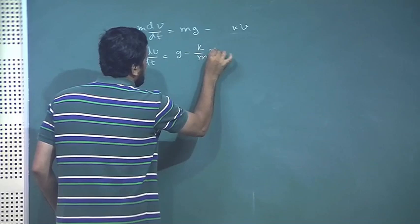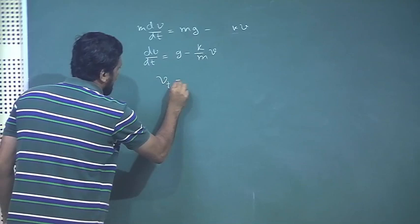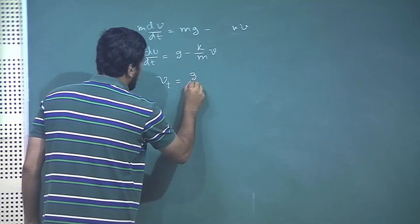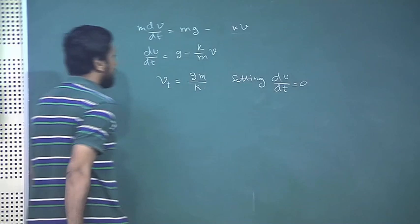The equation becomes dv/dt = g - (k/m)v, and the trick is to set this equal to 0 in order to get terminal velocity. We get terminal velocity v_t equal to gm/k by setting dv/dt equal to 0.